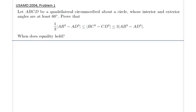Hello everyone, in this lecture we will be studying USAMO 2004 problem number 1. This is a geometric inequality problem. We are given a quadrilateral ABCD circumscribed about a circle whose interior and exterior angles are at least 60 degrees. So this information will be useful later on. We would like to prove the following two inequalities and also consider the equality condition in those inequalities.